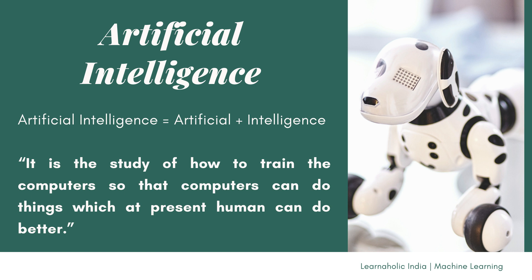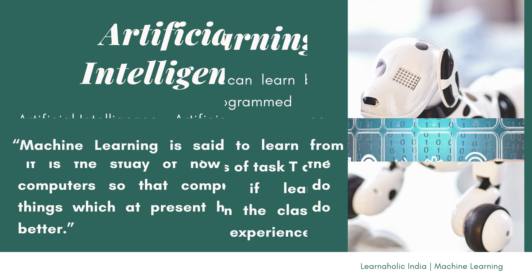Artificial Intelligence is implemented in the system. There can be many definitions of Artificial Intelligence. One definition is: it is the study of how to train computers so that computers can do things which at present humans can do better. Therefore, it is an intelligence where we want to add all the capabilities to machines that humans contain.